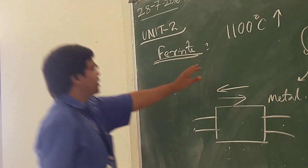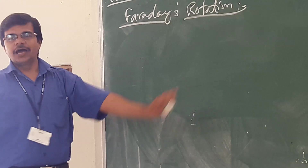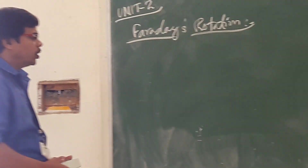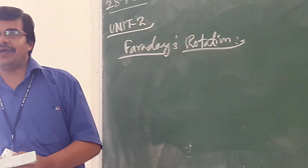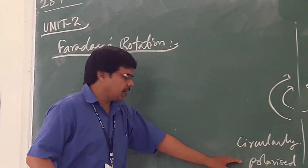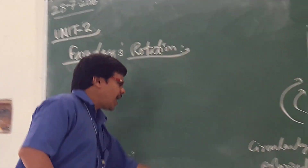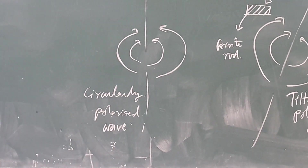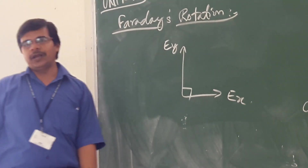Now let us consider the circularly polarized wave. When we are looking at polarization, we concentrate on the electric field. A circularly polarized wave means you have two waves that are 90 degrees from one another — your Ex component and your Ey component — and they are 90 degrees from one another.